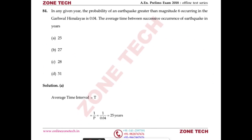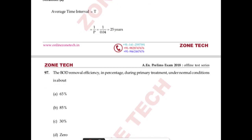Question number 84: the probability of an earthquake greater than magnitude 6 occurring in the Garhwal Himalaya in any given year is 0.04. The average return period (average time between successive occurrences) = 1/probability = 1/0.04 = 25 years. Answer: A.